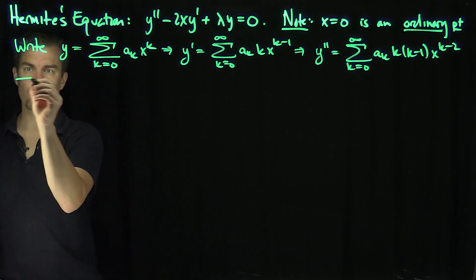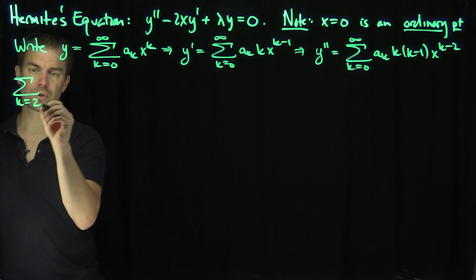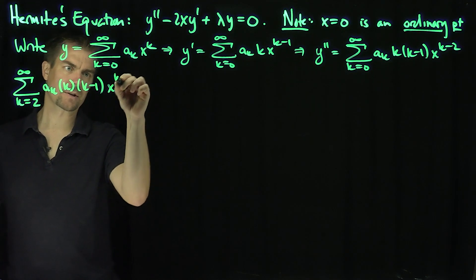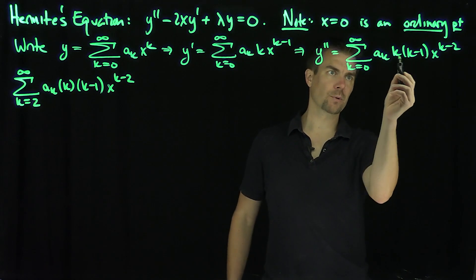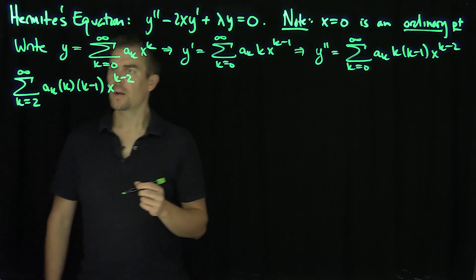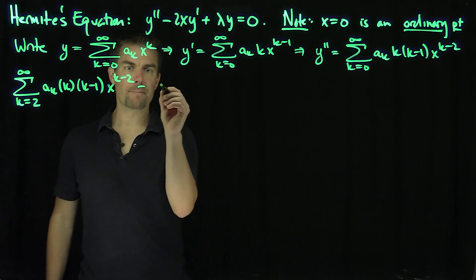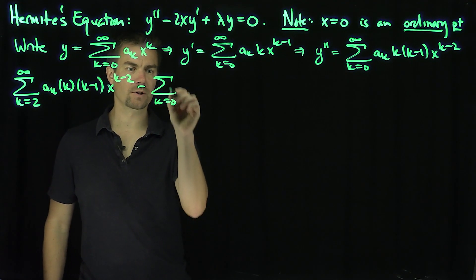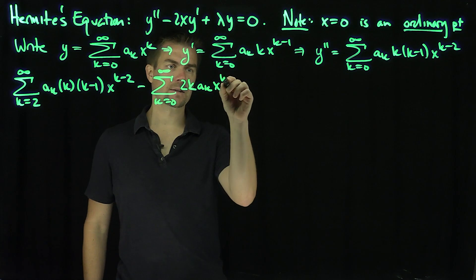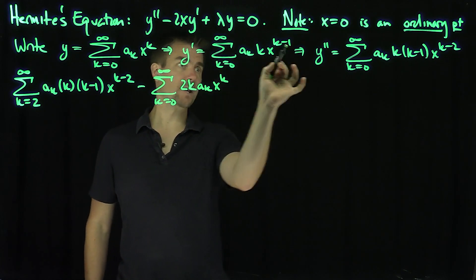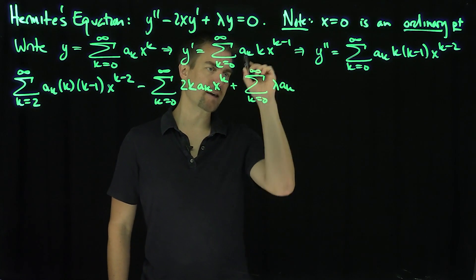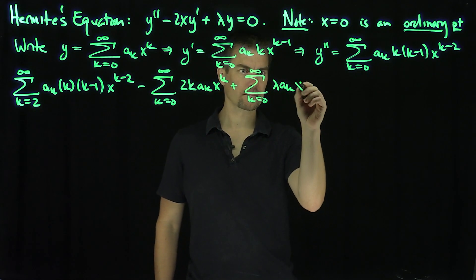Our differential equation becomes the sum from k equals 2 to infinity of a_k times k times k minus 1, x to the k minus 2, minus the sum from k equals 0 to infinity of 2k times a_k x to the k, plus the sum from k equals 0 to infinity of lambda a_k x to the k. Note that x to the k minus 1 is hit with an x, so that negative 1 goes away.